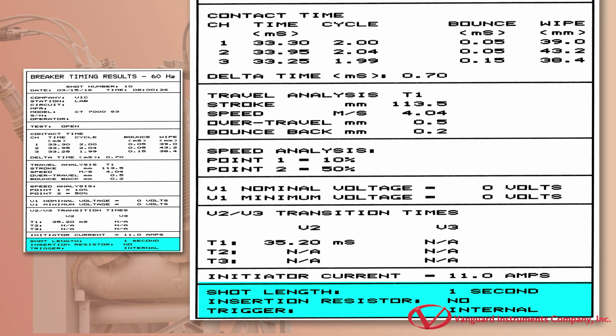This last section shows additional test information. We can see that the shot duration was one second, there was no insertion resistor in the circuit breaker under test, and the trigger mode was set for internal trigger.